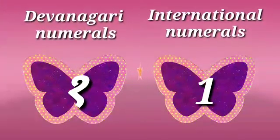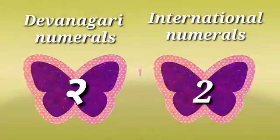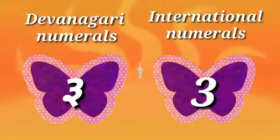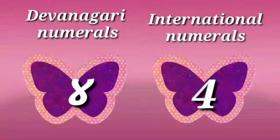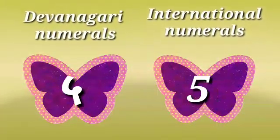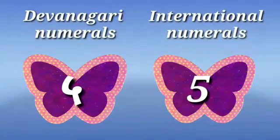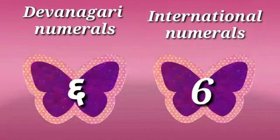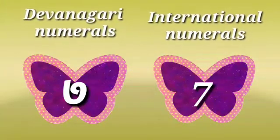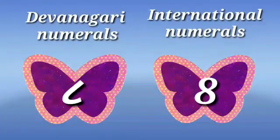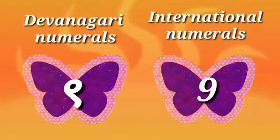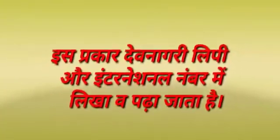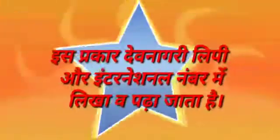The Devanagari and International numbers correspond as follows: 1-1, 2-2, 3-3, 4-4, 5-5, 6-6, 7-7, 8-8, 9-9, 10-10. Numbers can be written and read in both Devanagari script and International numerals.